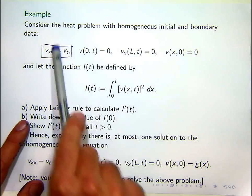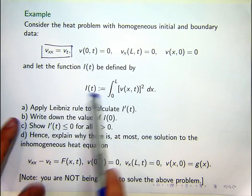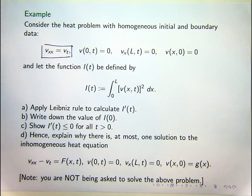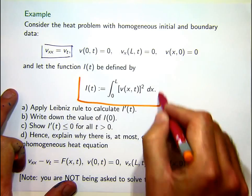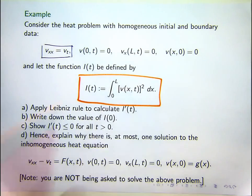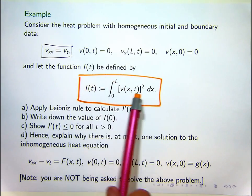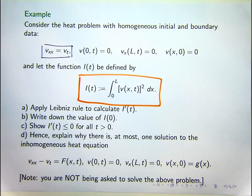Given that v is a solution to this problem, whatever it is, we've now defined a function I of t via this integral. It's a single integral and the dummy variable here is x, so it's really a function of time t. We're asked to do a number of things. The first three steps are reasonably easy. The final sub-question d is a little bit more complicated. Let's go through it step by step and see how we go.